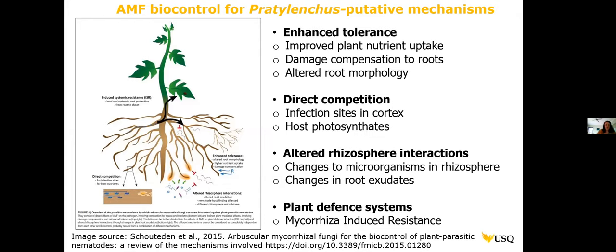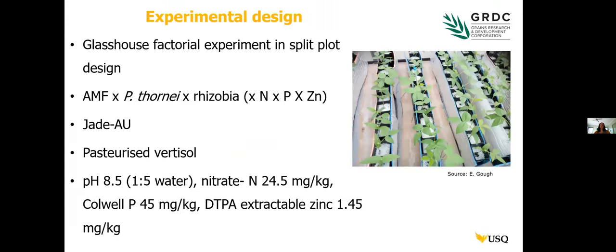We carried out glasshouse factorial experiments in a split-plot design. The first set of experiments looked at AMF, Pradylenchus thornei, and rhizobia. The second set added plant nutrients — nitrogen, phosphorus, and zinc — making it a multifactorial experiment. We used the cultivar Jade Au, which has the market share for mungbean up here, grown in a pasteurized vertisol — the soil type commonly found in the Northern Grains region — with soil chemical properties listed.